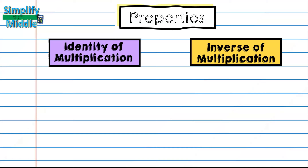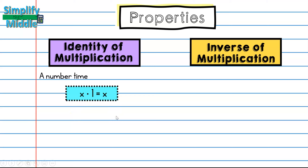The last two properties are the identity and inverse of multiplication. Just like with addition, the identity and inverse of multiplication have a relationship as well. Anything times 1 is going to equal itself — x times 1 equals x. A number times 1 equals itself, and this can also be 1 times a number equals the number, because the commutative property says order doesn't matter. So 5 times 1 equals 5, or 1 times 5 equals 5.